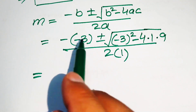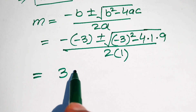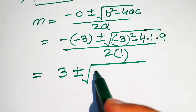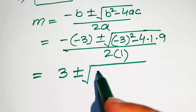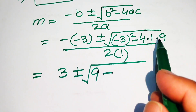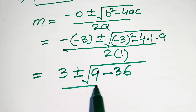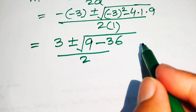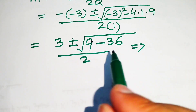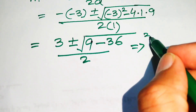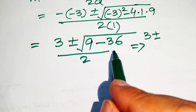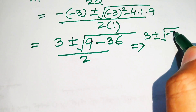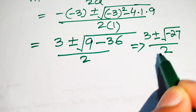Multiplying minus by minus gives 3. We get 3 plus or minus square root of (9 minus 36) divided by 2. Subtracting these two terms gives square root of minus 27, so the expression becomes (3 plus or minus square root of minus 27) divided by 2.